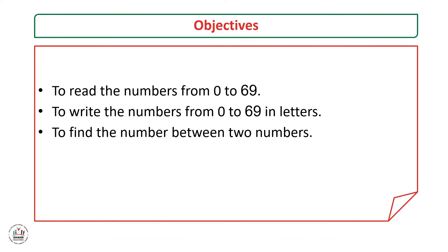Our objectives for this lesson are: the first one, to read the numbers from 0 to 69; the second one, to write the numbers from 0 to 69 in letters; and the last one, to find the number between two numbers. Let's start.